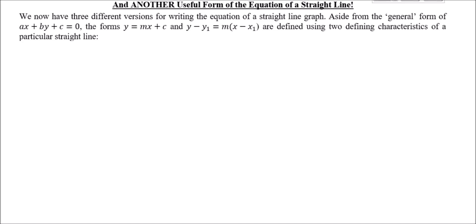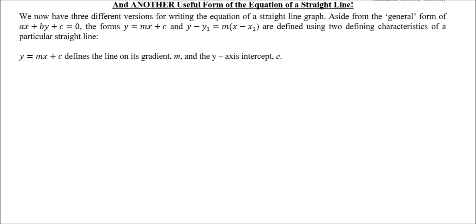Now let's introduce another form of the equation of a straight line you probably haven't seen before. So far we've used three versions: the general form ax + by + c = 0; the familiar y = mx + c; and the gradient-point form y − y₁ = m(x − x₁). There's also a fourth form, which is fairly rare but has its uses.